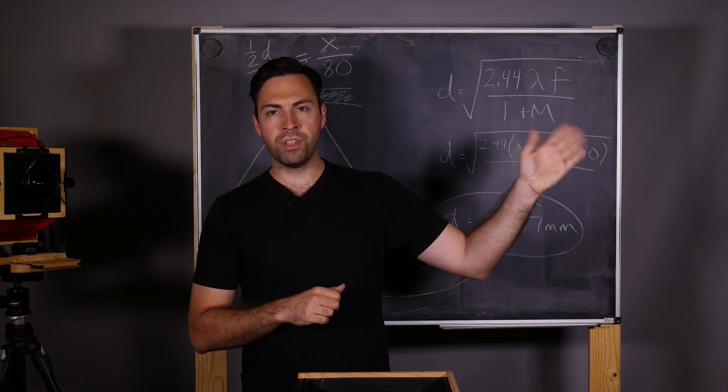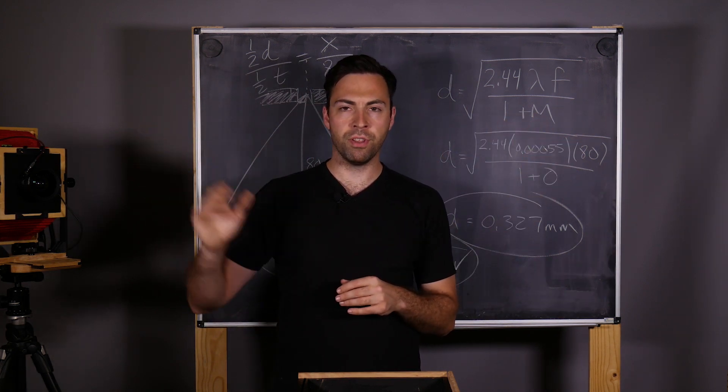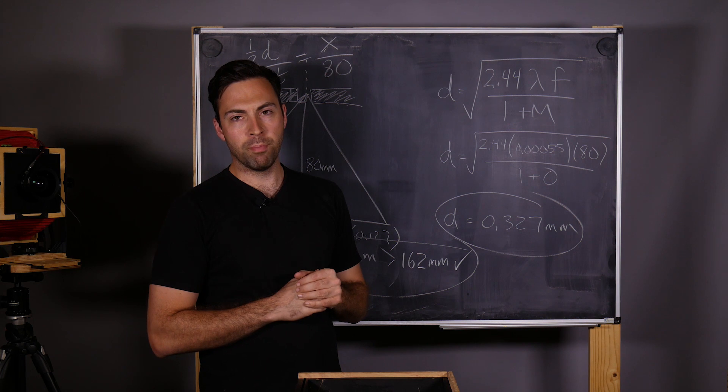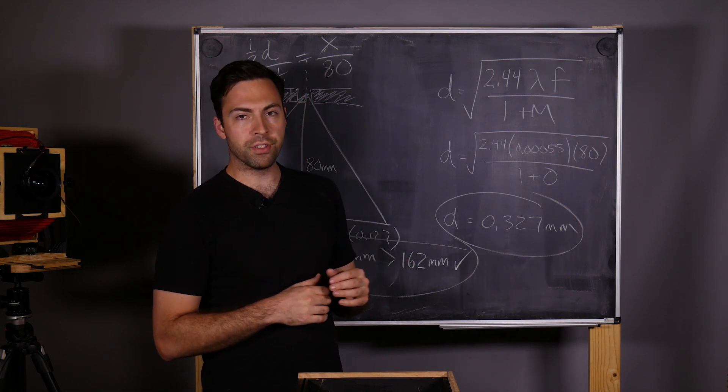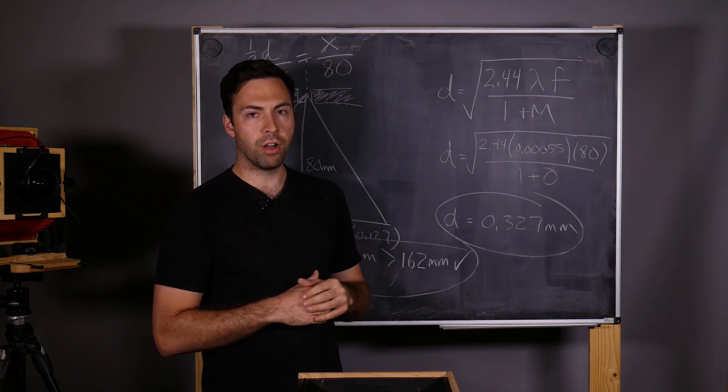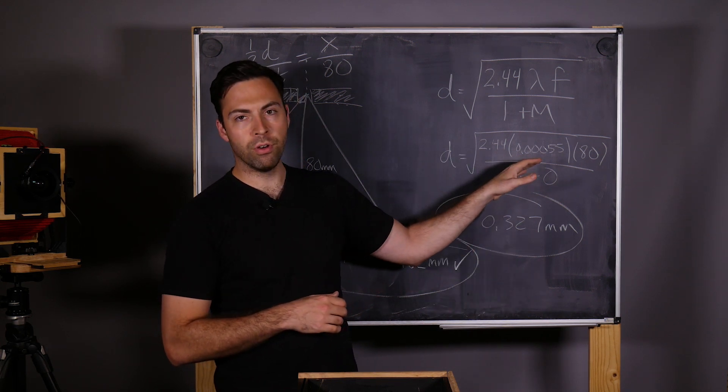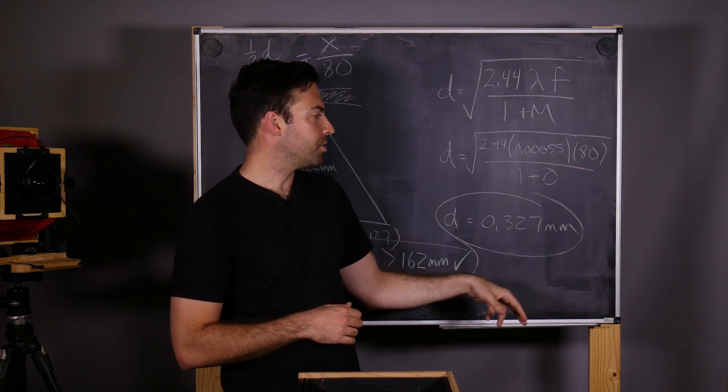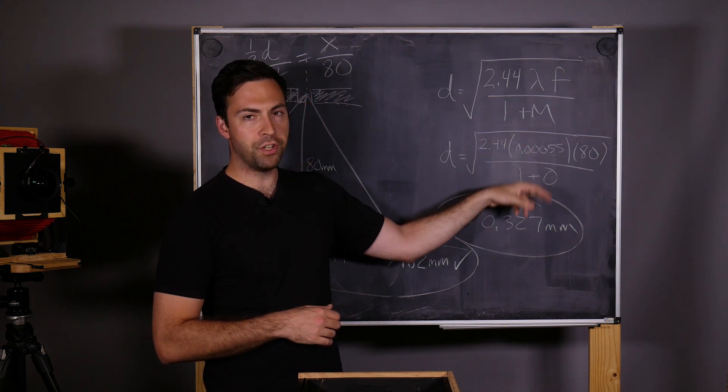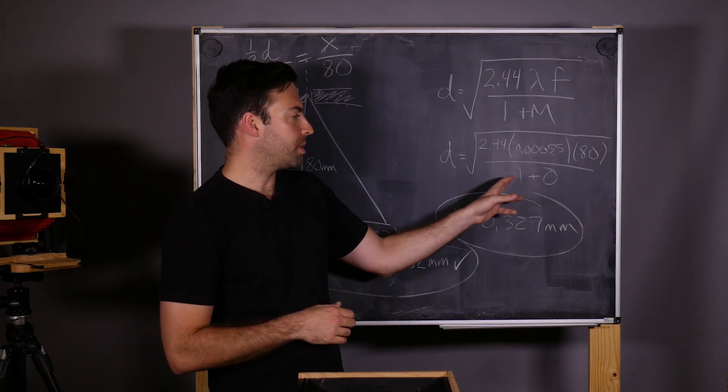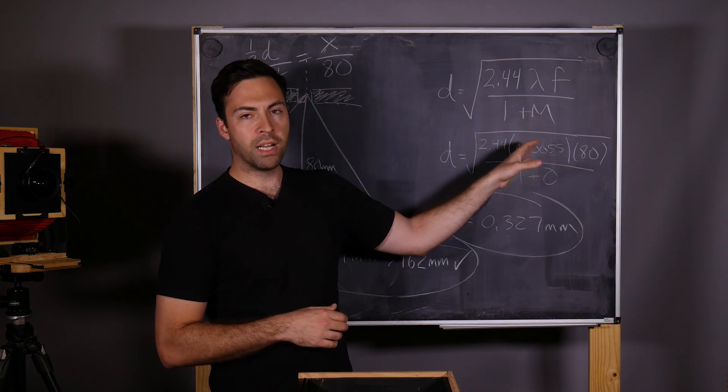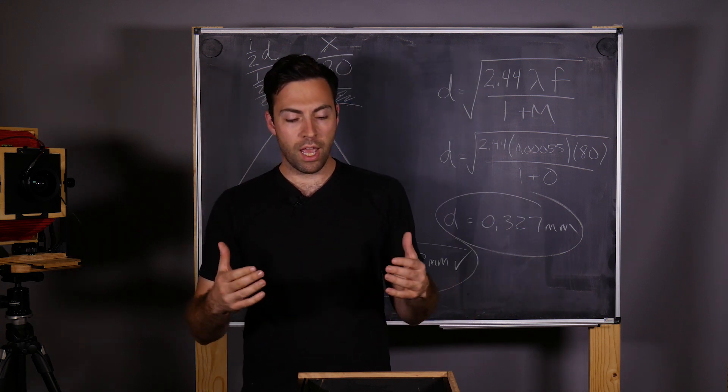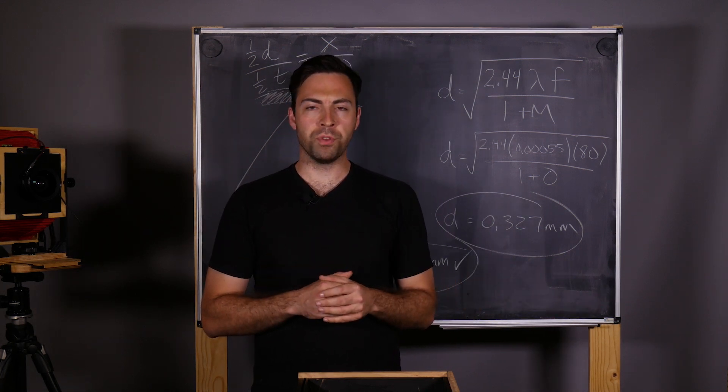We've got red over in the 700 range and violets and ultraviolets at the 400 range, so right in the middle is a good approximation. If you're taking pictures of just red things or just blue things, you can put in that wavelength, but it's typical to start with the middle of the visual spectrum. Times our focal length, which is 80 millimeters, all divided by 1 plus m. Magnification we're setting to 0, so this is divided by 1 and goes away.